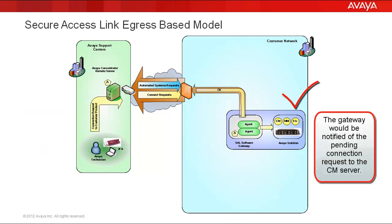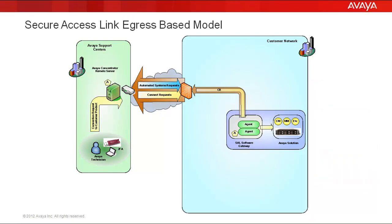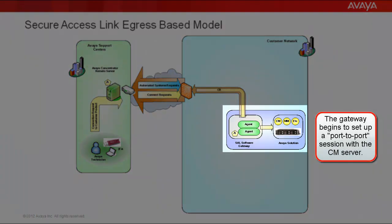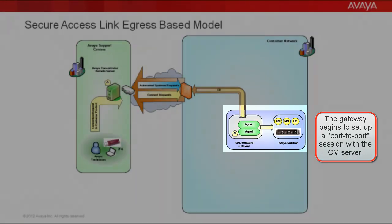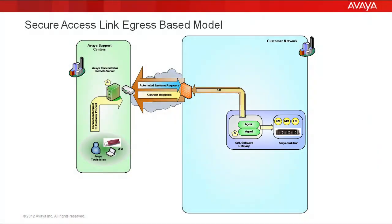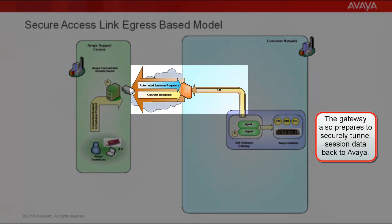In this case, there would be one pending request for the CM server from this user. The gateway, now aware that there is a pending request for the CM server that it manages, begins to establish a port-to-port session with the CM, and in parallel, prepares to securely tunnel this remote session back to Avaya.